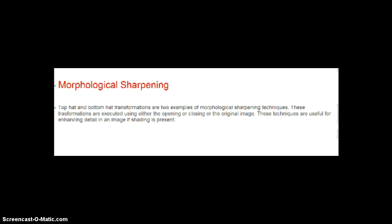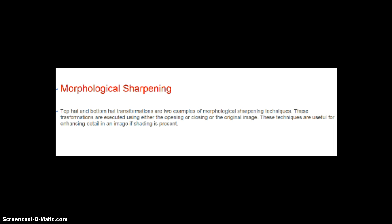Both of these transformation techniques are executed by either using the opening or closing of the original image. If you haven't gone over opening and closing, you might want to check that video out before continuing with this one. These techniques are useful for enhancing detail in an image if shading is present. The combining of image subtraction with opening and closing results in the top hat and bottom hat transformations.